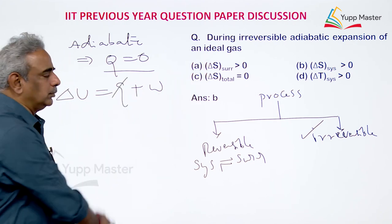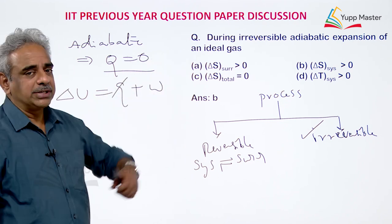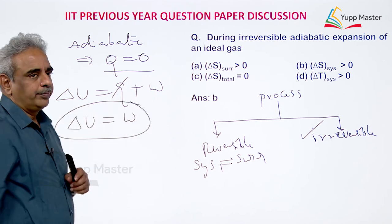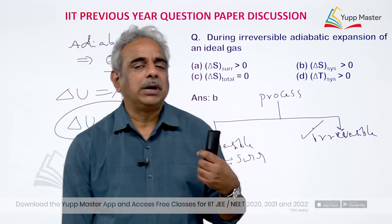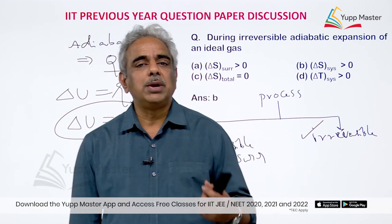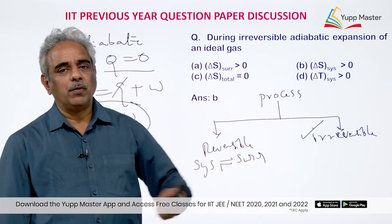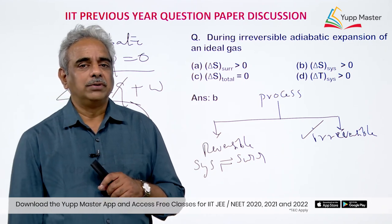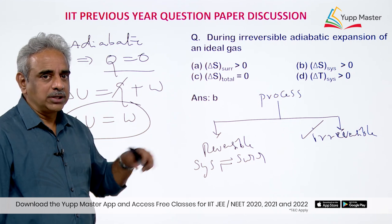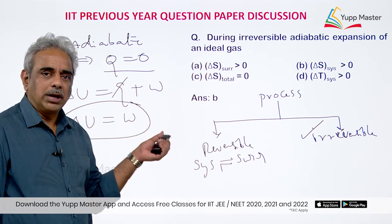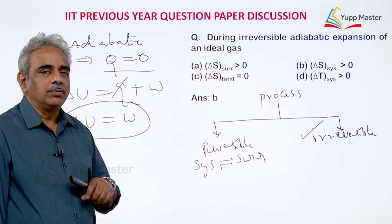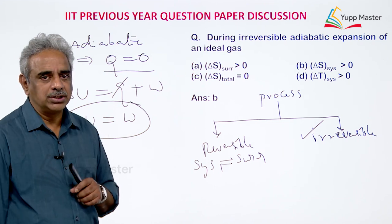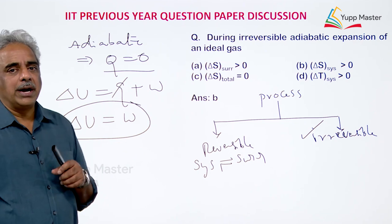In an adiabatic process, Q = 0 — the system is not exchanging any heat with the surrounding. So ΔU = W. The energy of the system changes only because of work. If the system does some work, there will be a loss in energy — work done in expansion is negative, so ΔU will be negative. If work is done on the system, work is positive, and there will be an increase in internal energy. This is always valid for an adiabatic process.